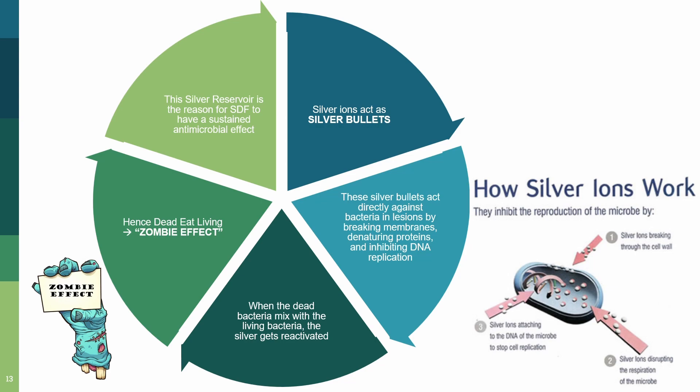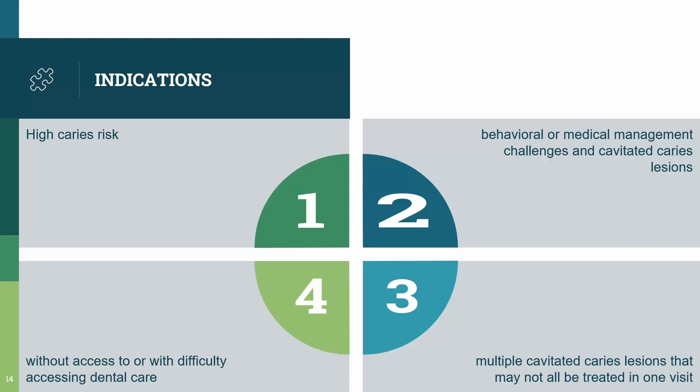Now let's look at the indications of SDF — in which cases can SDF therapy be suitable. First are cases where we can see a high caries risk. Second are kids with whom behavioral management is difficult, or kids who have any predisposing medical condition that makes it difficult to manage cavitated caries lesions. Third is kids who have multiple cavitated caries lesions that cannot all be treated in one sitting. Lastly, it's very helpful in areas where healthcare access is limited, such as dental camps or remote regions.